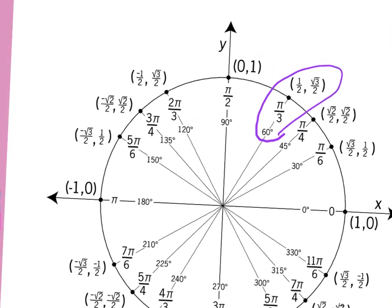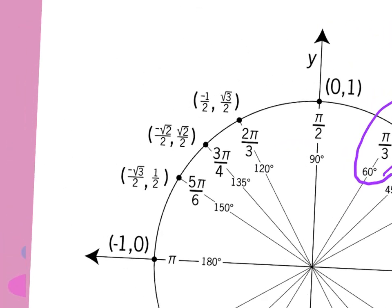Let's go to an angle in the second quadrant — 5 pi over 6. This is the coordinate point that matches it, right? It's an over-6, so every over-6 has root 3 over 2 and 1 half. But it's in the second quadrant — all students take calculus — which means sine is positive, so y is positive, but x is negative. It's a coordinate point, so we move left and up to get to the second quadrant.